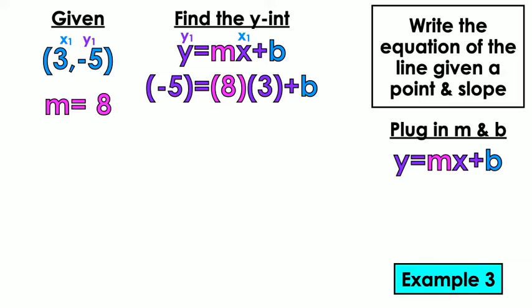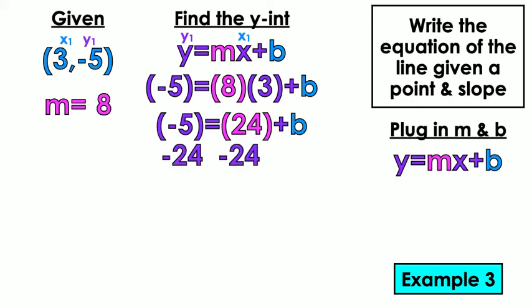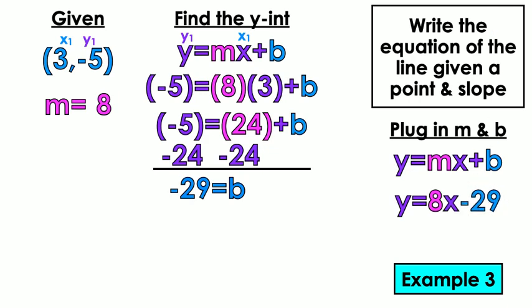Multiply first. 8 times 3 is 24. Then we'll get rid of that 24 by moving it to the other side. Negative 29 is what I get when I subtract negative 5 minus 24. And that's my B value. So now I can plug them into the equation. Y equals 8X minus 29.